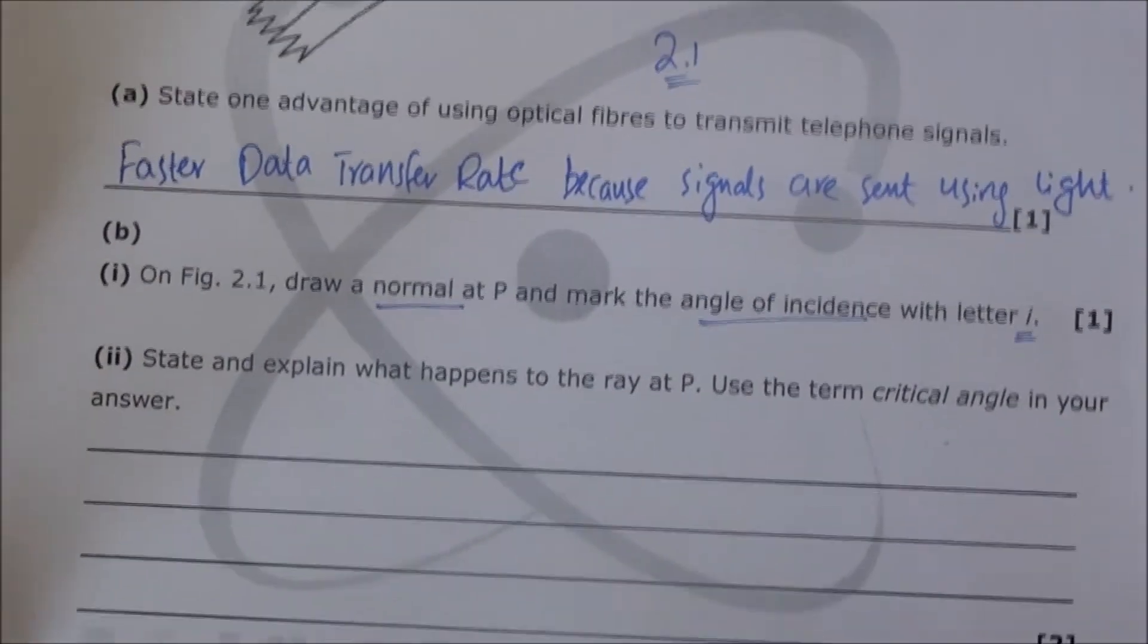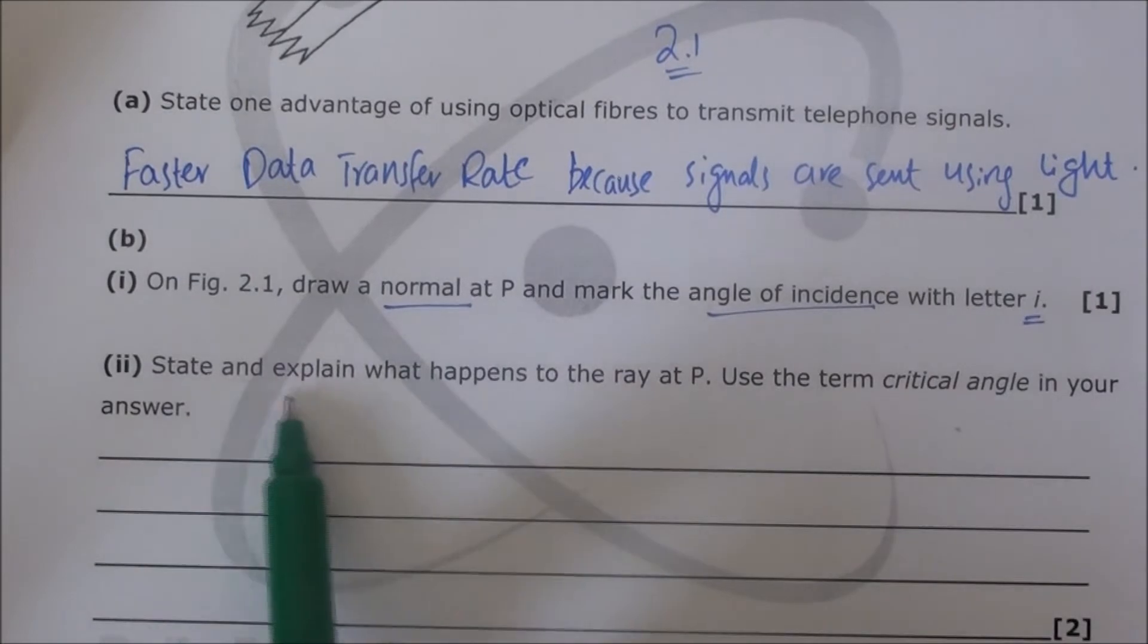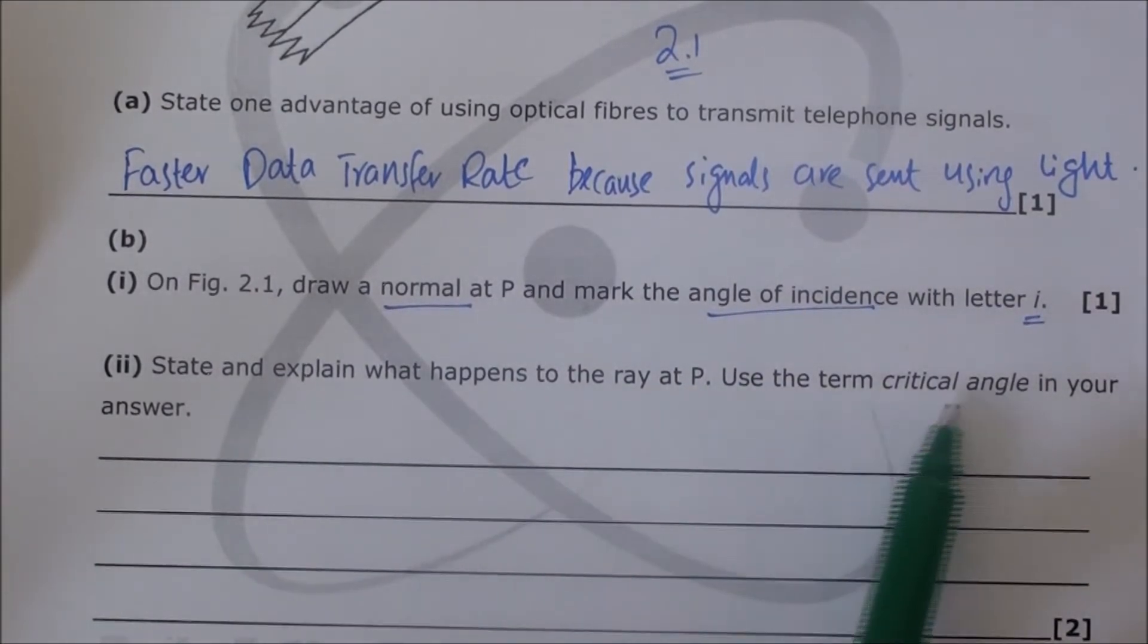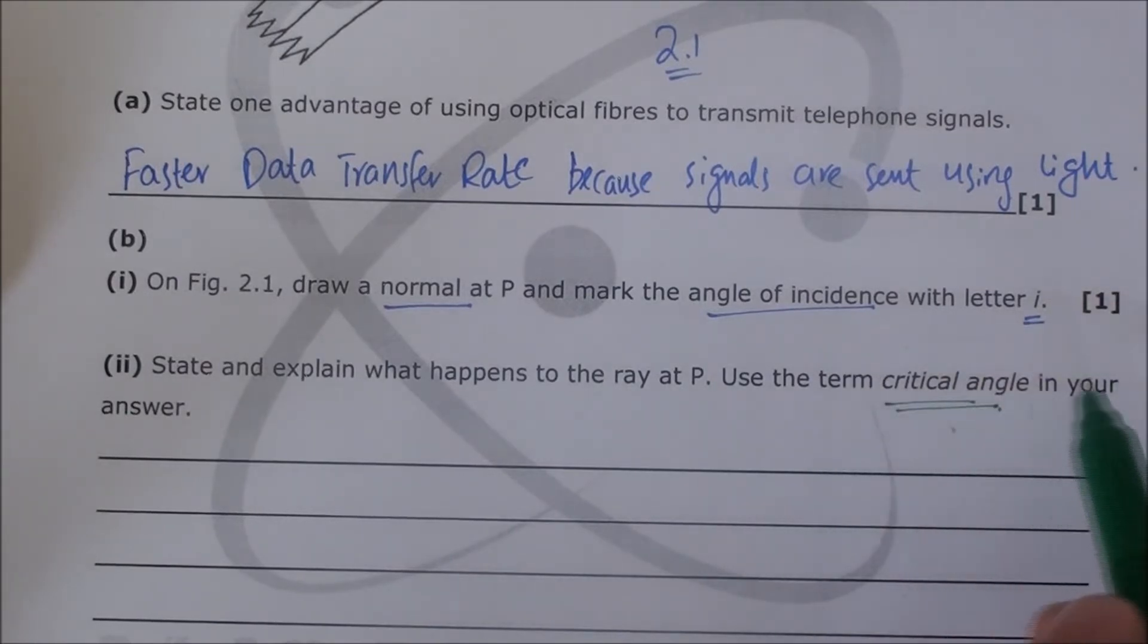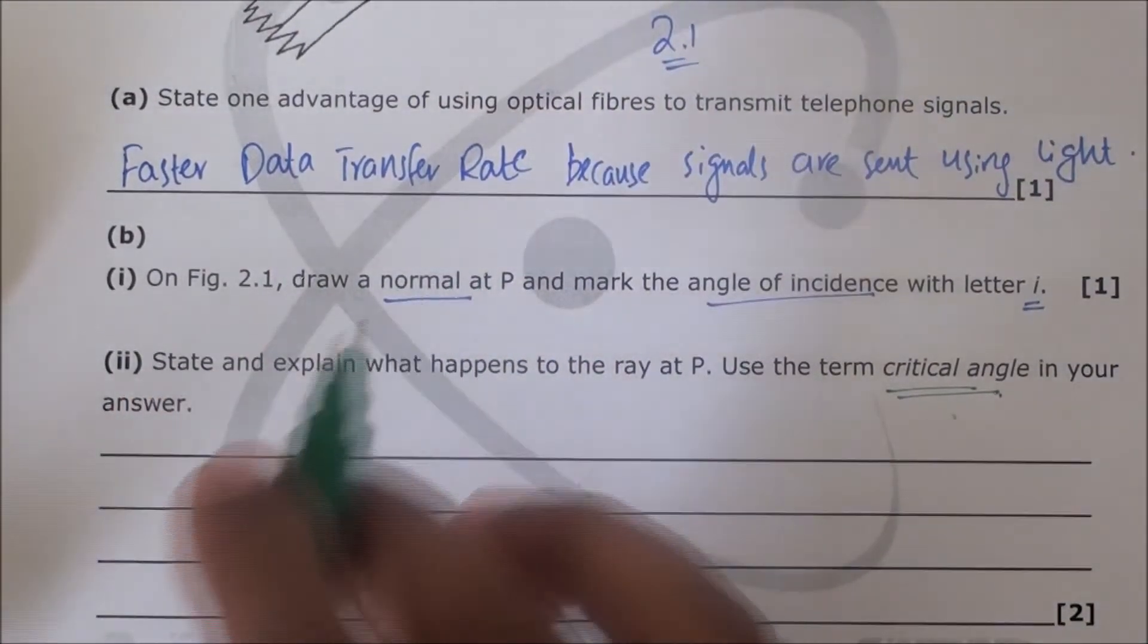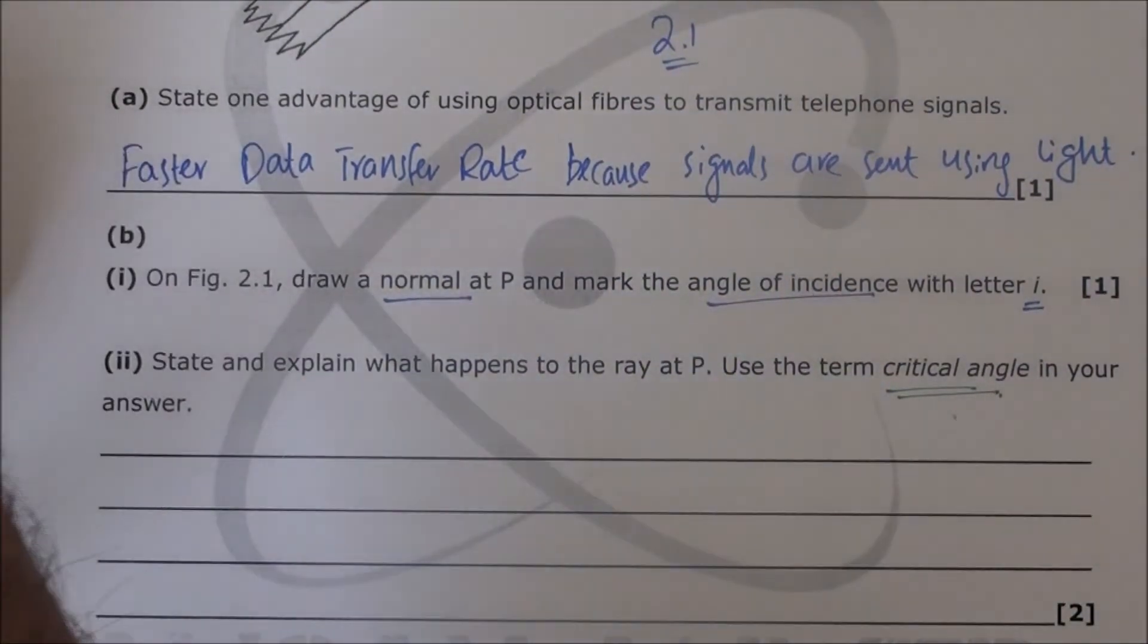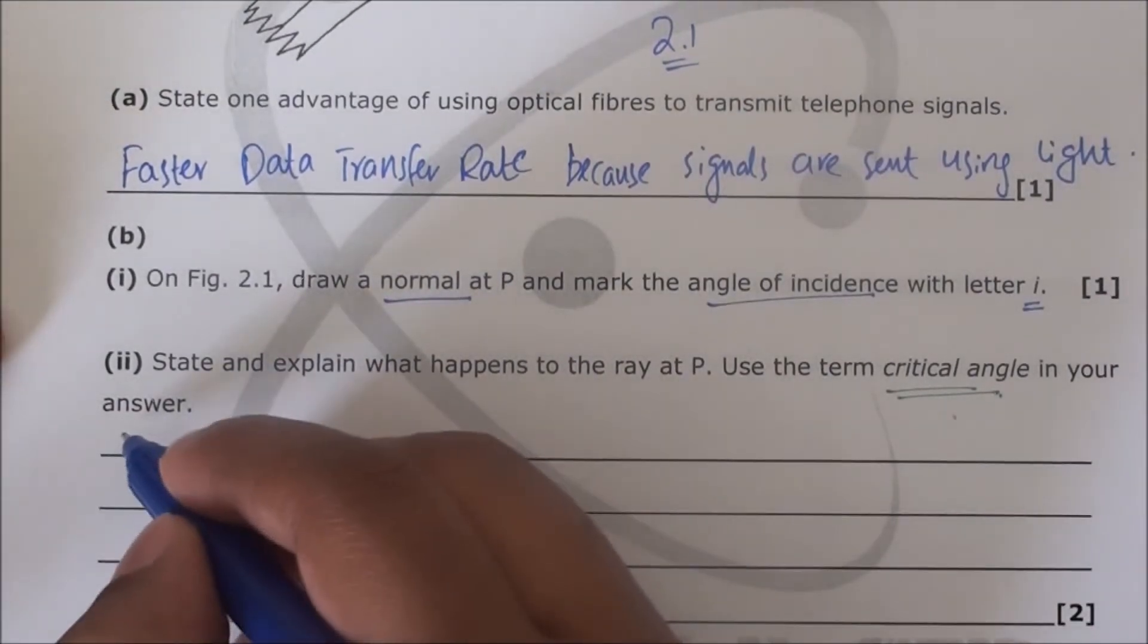Let's move to the next part of the question. It clearly says state and explain what happens to the ray at P. Use the term critical angle in your answer. So we have to tell what happens in regards to critical angle and what are the possibilities that can happen to that ray.